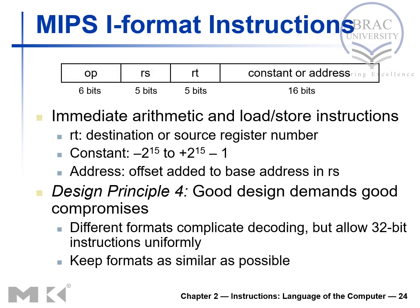In the previous slide, we saw R-type instructions where the instruction length was 32 bits and it was broken down into various fields to represent the R-type instruction. In this slide, we have the I-type instruction. This instruction length is also 32 bits. It has an opcode, it has RS which is source, and RT which is the destination, and then there is a constant field.